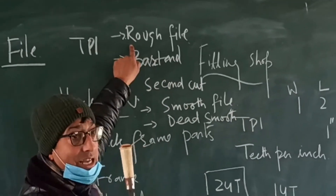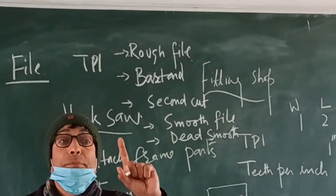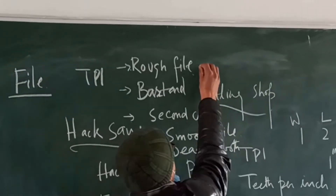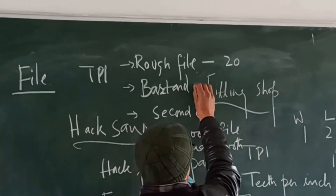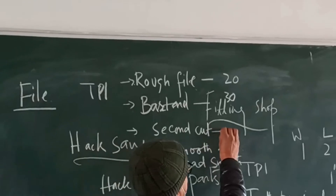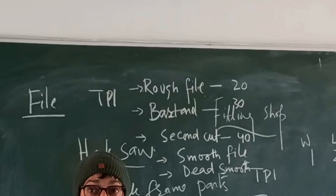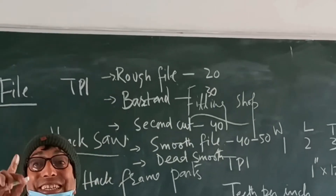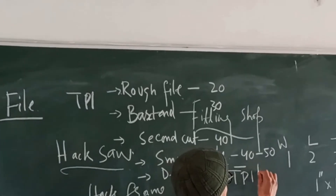These classifications are on the basis of number of teeth. For the rough file, number of teeth is 20 per inch. For the bastard file, 30 per inch. For the second cut file, 40 per inch. For the smooth file, 40 to 50 per inch. And for the dead smooth file, the number of teeth is 100 per inch.